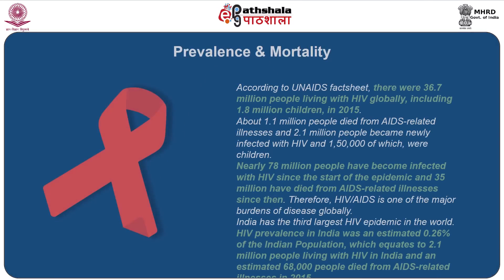Now let us look at prevalence and mortality due to HIV. According to the UN AIDS fact sheet of 2015, there were 36.7 million people living with HIV globally, including 1.8 million children. About 1.1 million people died from HIV related illnesses and 2.1 million people became newly infected with HIV, about 1,50,000 of which were children. Nearly 78 million people have become infected with HIV since the start of the epidemic and 35 million have died from HIV AIDS related illness. Therefore, HIV AIDS is one of the major burdens of disease globally.